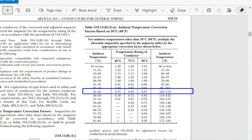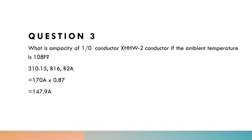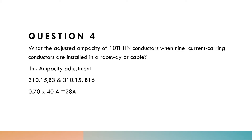For the 90-degree Celsius column with an ambient of 108 degrees Fahrenheit, the ambient correction factor is 0.87. We multiply 0.87 by 170 amps, which gives an adjusted ampacity of 147.9 amps. The effect of the elevated ambient temperature reduces the conductor's ampacity from 170 amps down to 147.9 amps.